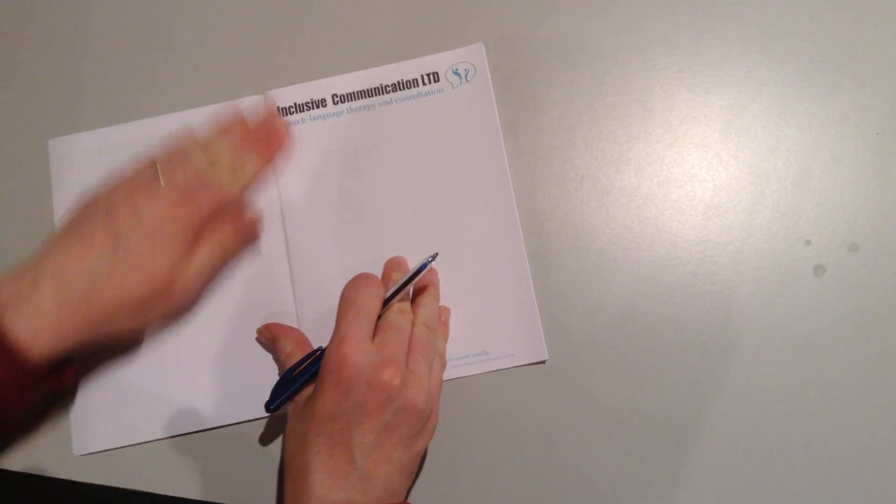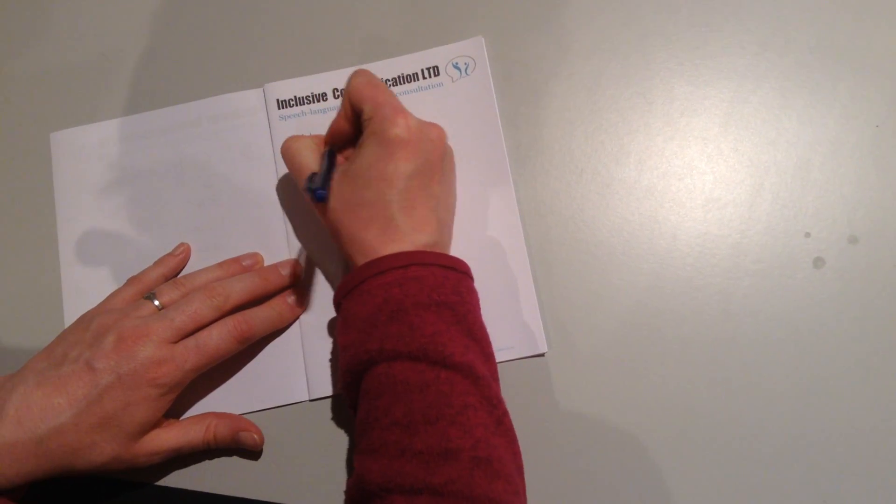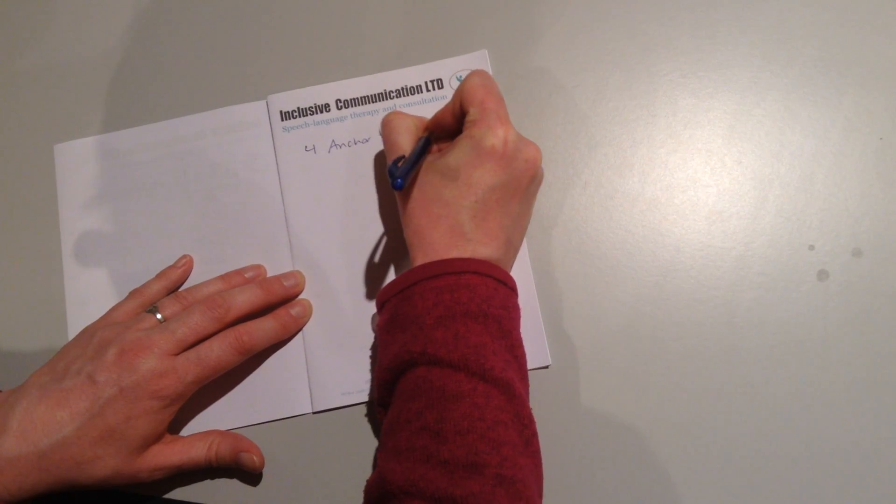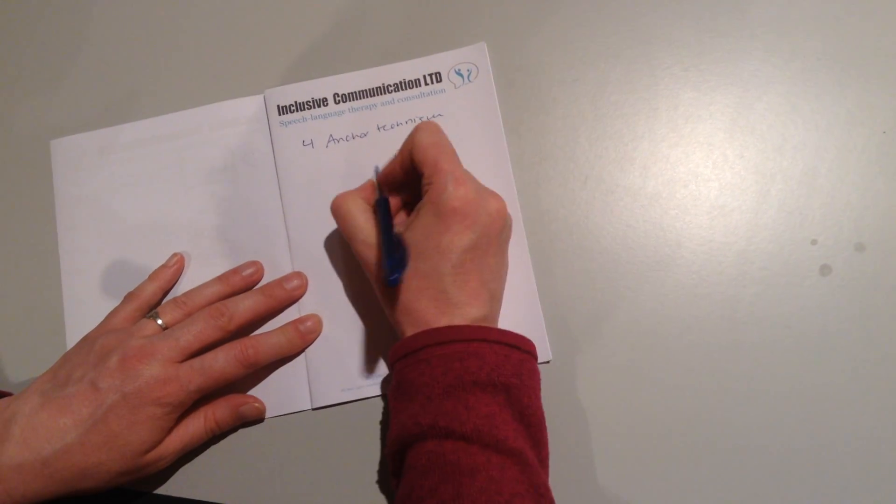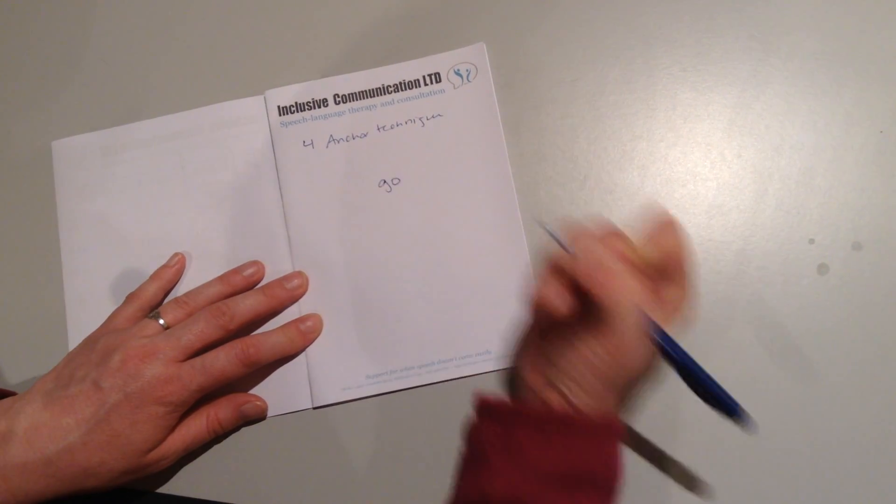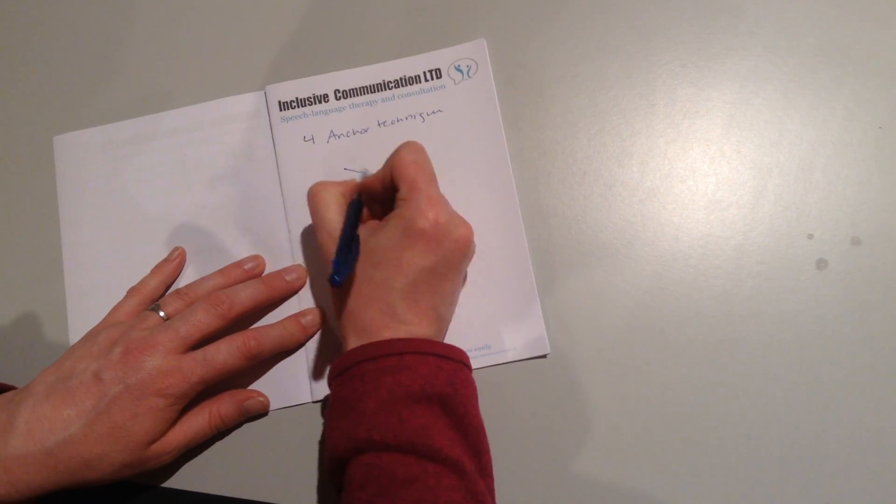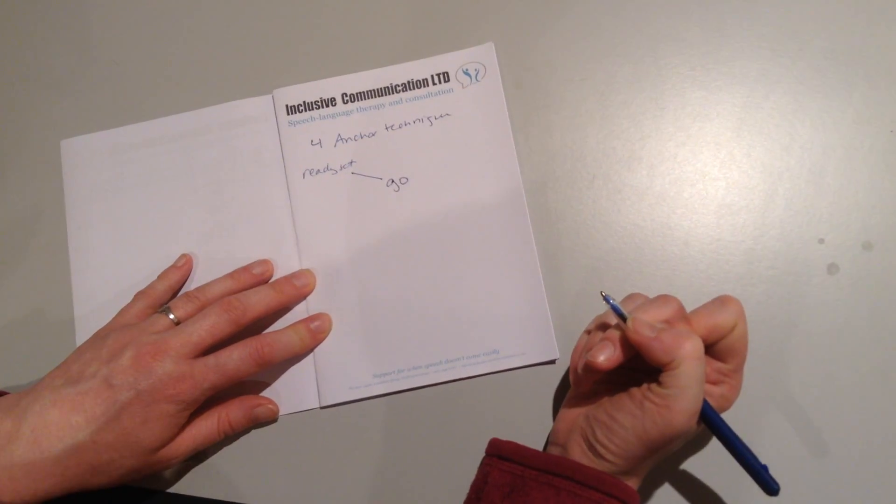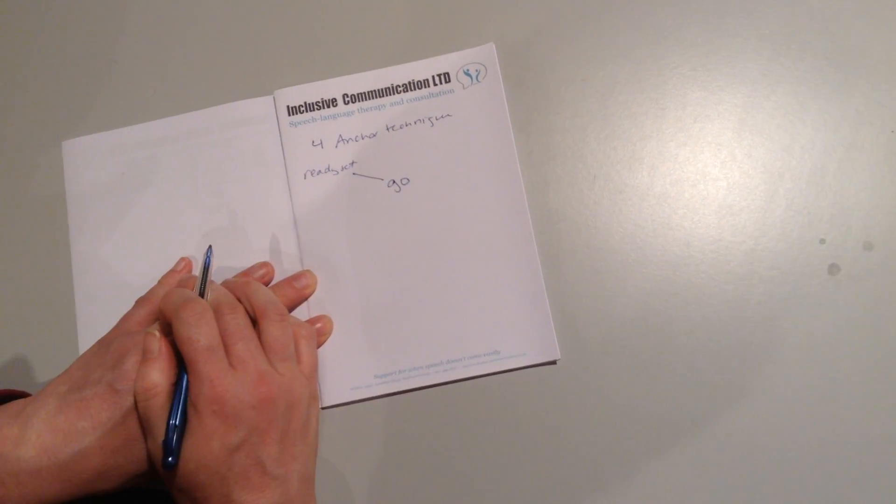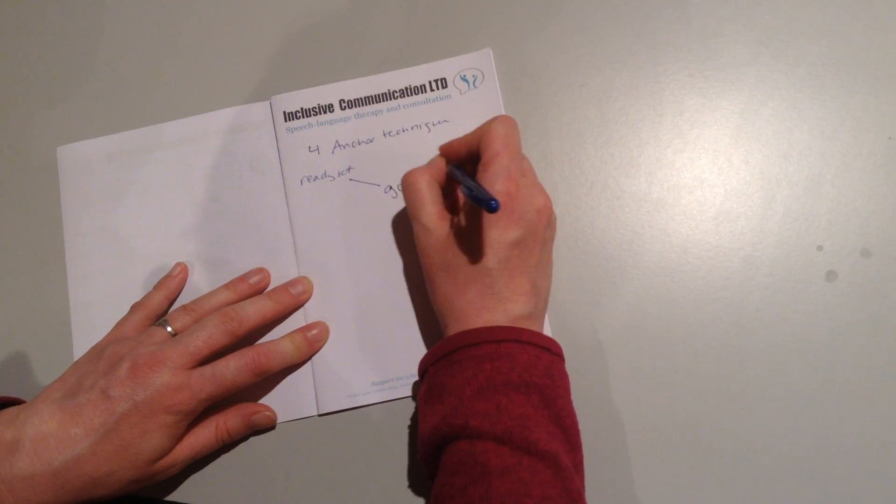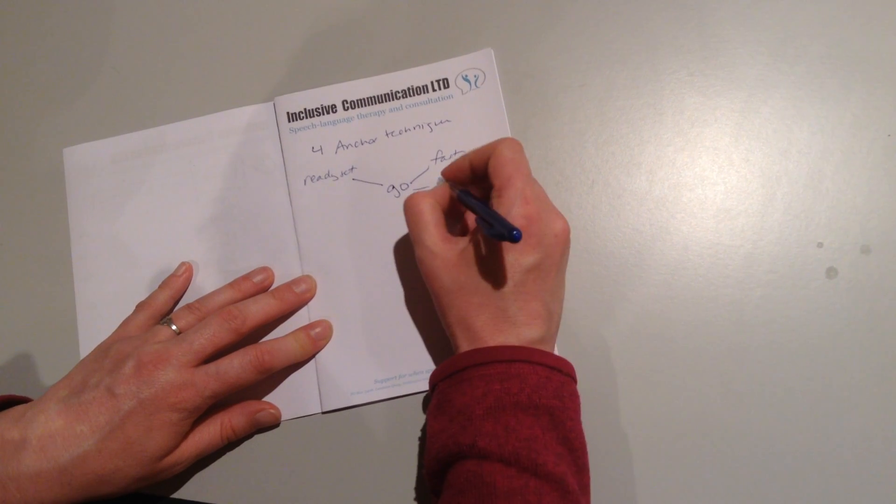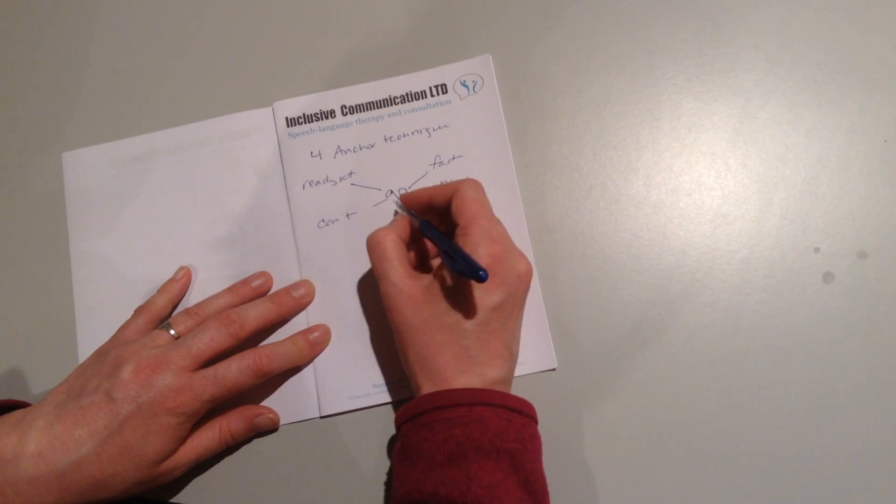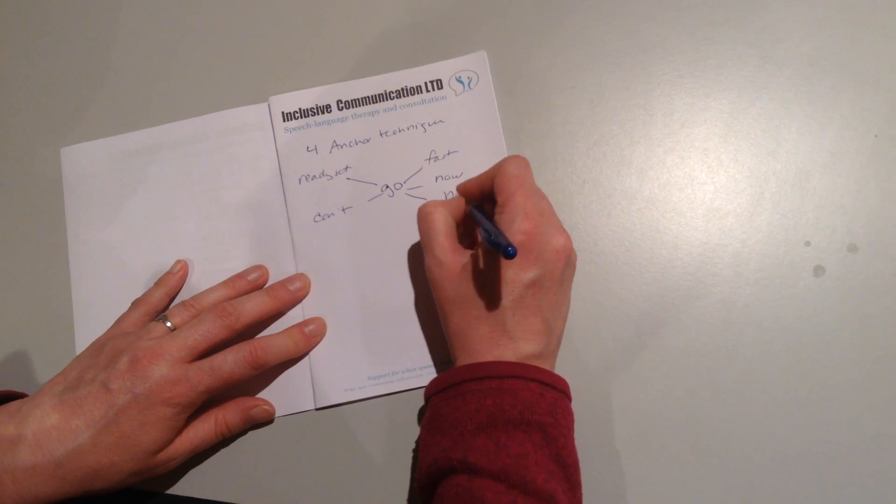The last thing we can do is what I sometimes call the anchor technique. If a child is using mostly a single word, let's say he says go, like ready, set, go. He might have ready, set, or ready, steady, go, but that might be his only combination. So maybe you could say go fast. Go now. Don't go. Go to mom.